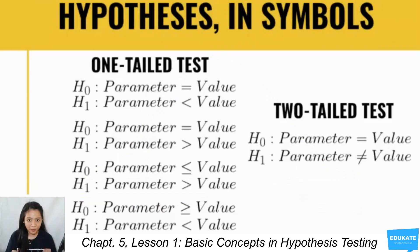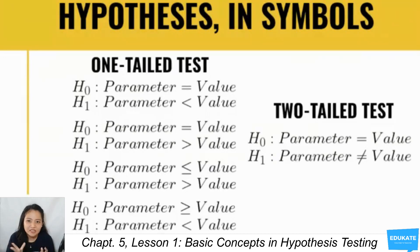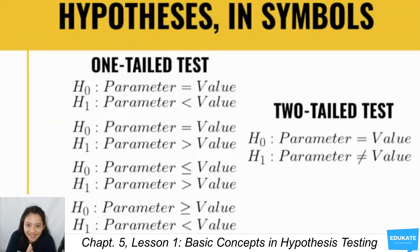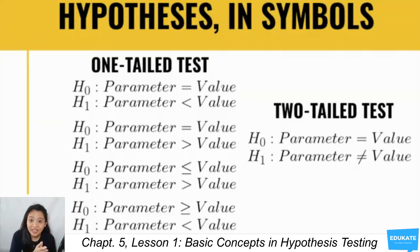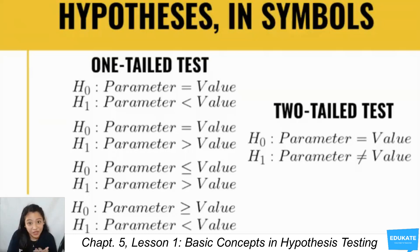The null and alternative hypothesis are complementary and must not overlap. If your alternative hypothesis has the symbols greater than or less than, it is automatically a one-tailed test. If the alternative hypothesis has less than, it is one-tailed to the left or left-tailed. If the alternative hypothesis has greater than, it is one-tailed to the right or right-tailed, where your parameter is greater than the value.